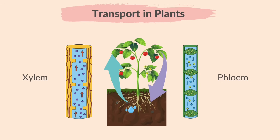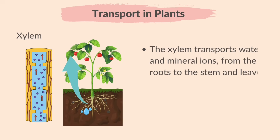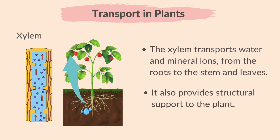The xylem and phloem are both transport vessels that help move substances around the plant. The xylem transports water and mineral ions from the roots to the stem and leaves. It also provides structural support to the plant.